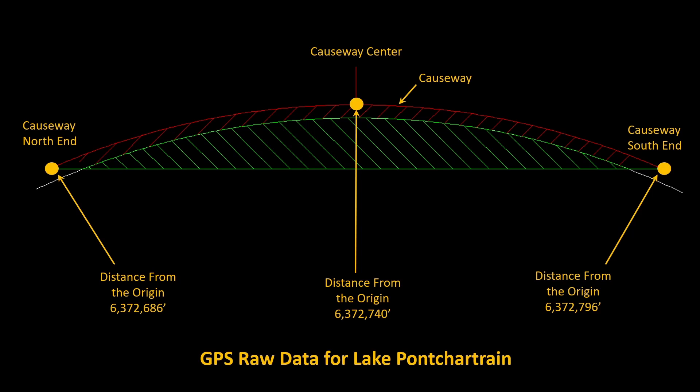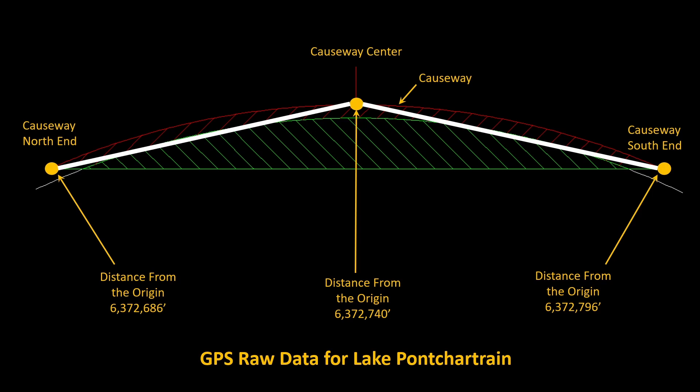Let's talk about Lake Pontchartrain. This is the GPS data taken from Lake Pontchartrain at the north end of the causeway, at the south end of the causeway, and in the center. Distances are GPS distances from the origin of the ECEF coordinate system that GPS uses. Notice that the horizontal from the north end to the center and the horizontal from the center to the south end are anything but parallel with each other. The more points we put in, the more horizontals we can produce. Horizontal is specific to one point only, and each horizontal would have its own zenith.